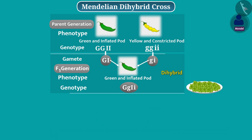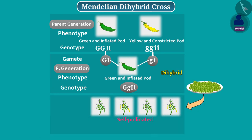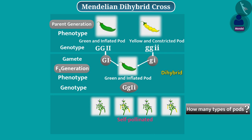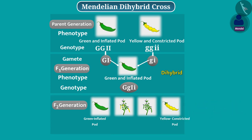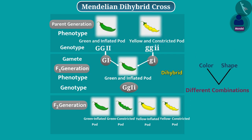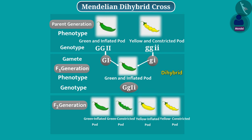Mendel grew plant seeds of F1 generation and self-pollinated the plants. Can you tell me how many types of pods would have been produced in the F2 generation? On the basis of monohybrid cross, we might expect some pods to be green and inflated and some pods to be yellow and constricted. But in F2 generation, four types of pods were produced. The F2 generation had different combinations of color and shape, from which two combinations were the same as that of parents and two combinations were new. All these pods were in the ratio of 9:3:3:1.